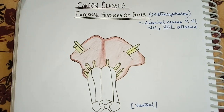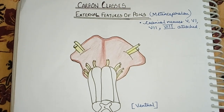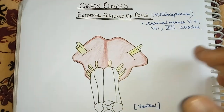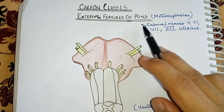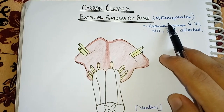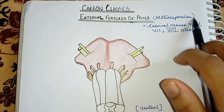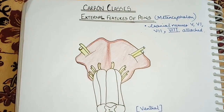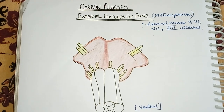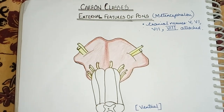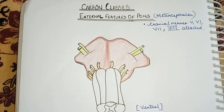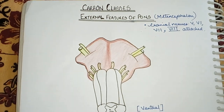Hi friends, welcome back to this new lecture of Carbon Classes. Today in this new lecture we are going to study about the external features of pons, which is also called metencephalon. Pons ko pyar se metencephalon bhi kehte hain. In today's lecture we are going to study about the various attachments, its location and its surfaces.